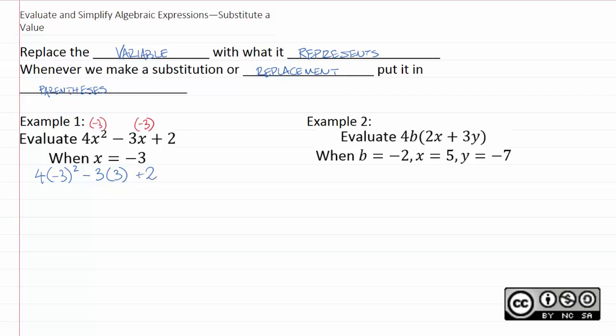Now in the order of operations, our first step is parentheses, but if you look here, everything in parentheses has been simplified all the way. So instead, we're going to do the next step, which is exponents. Well, negative three squared is negative three times negative three, which is positive nine. So we'll have four times nine, minus three times negative three, plus two.